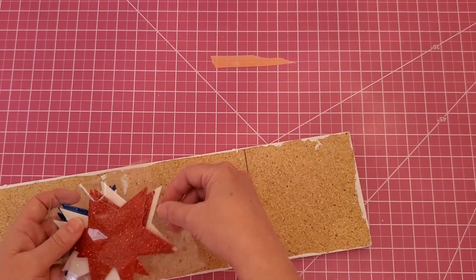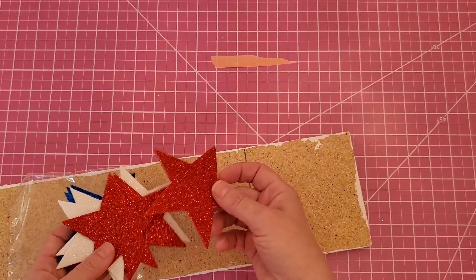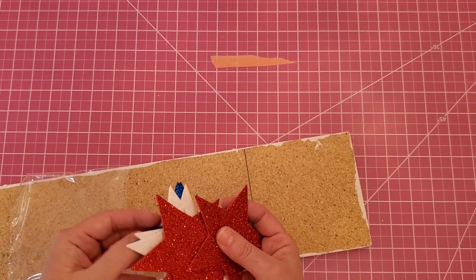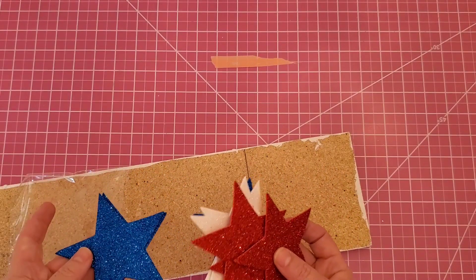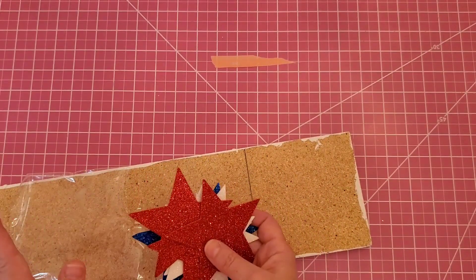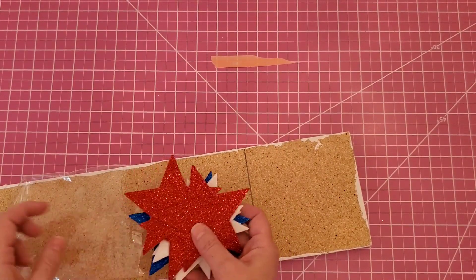I also have some foam stars. I got these on clearance last year at Hobby Lobby. So I have the red, the white, and the blue. And I think these will be cute on my sign. If I use these, I will have to put these on after I decoupage my letters on. I'm going to use Mod Podge to do that.